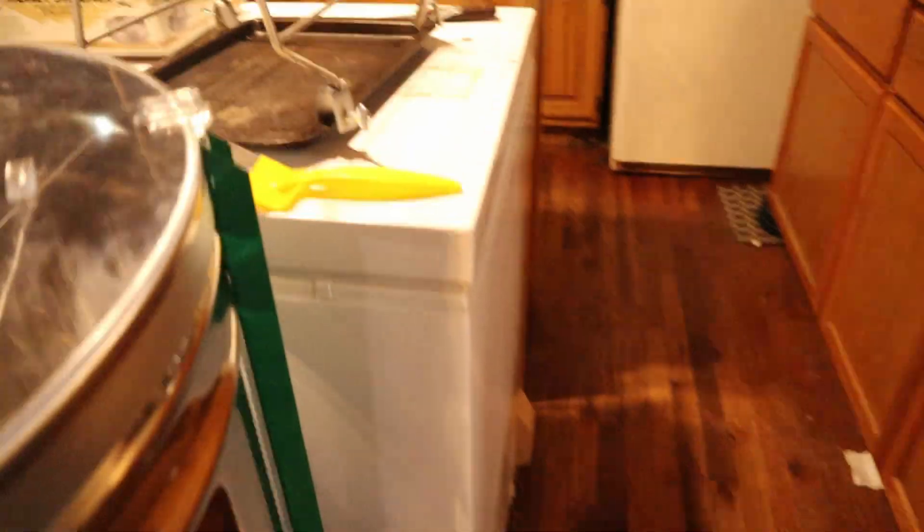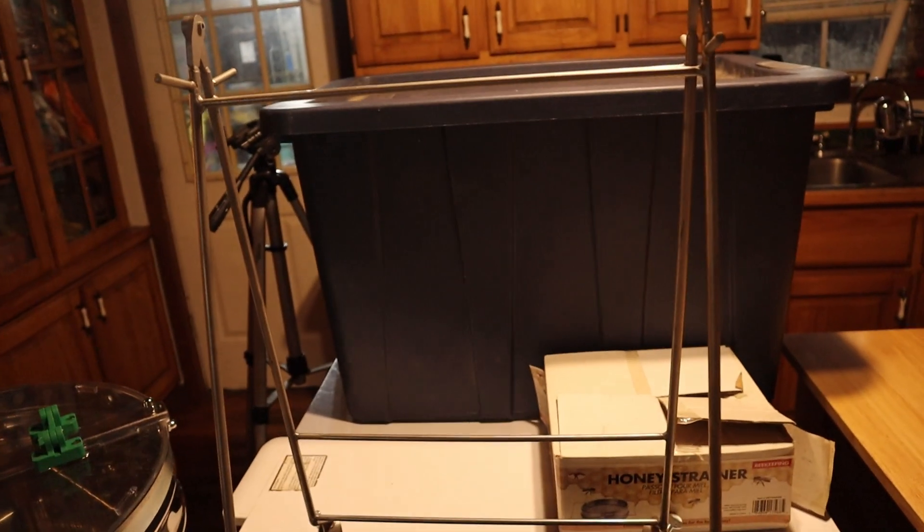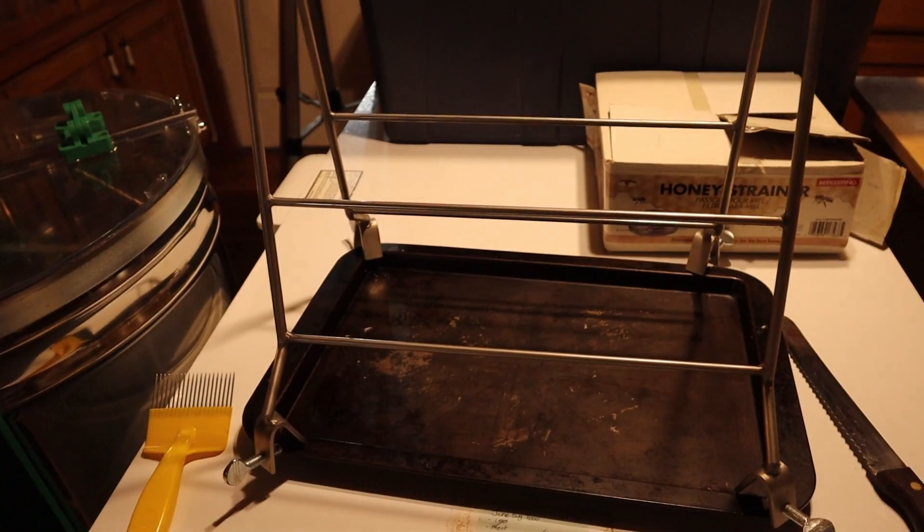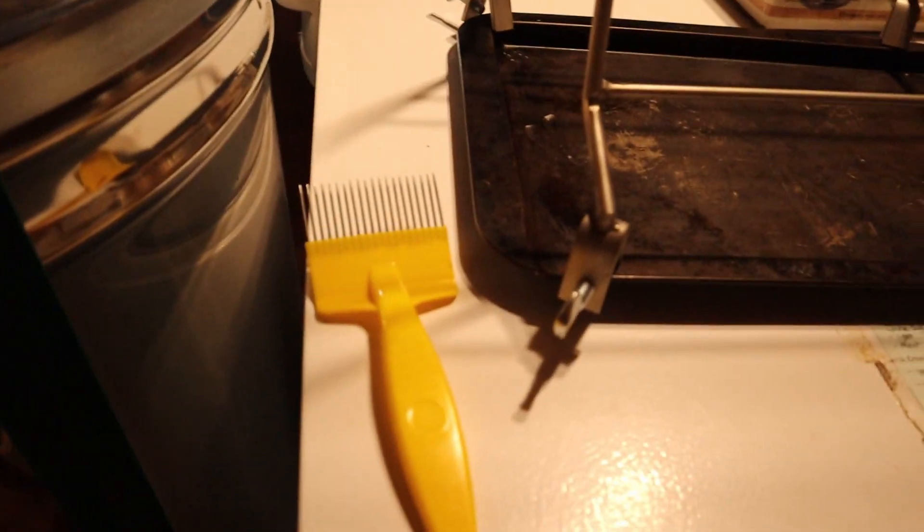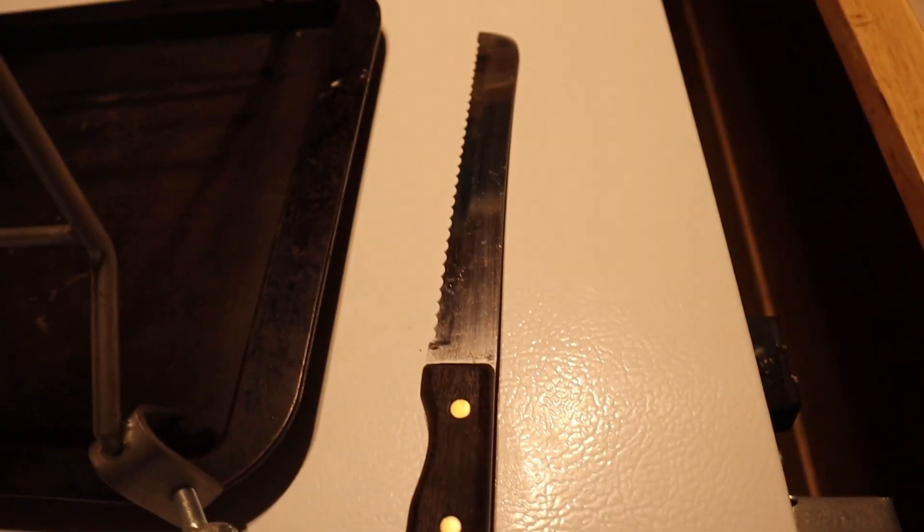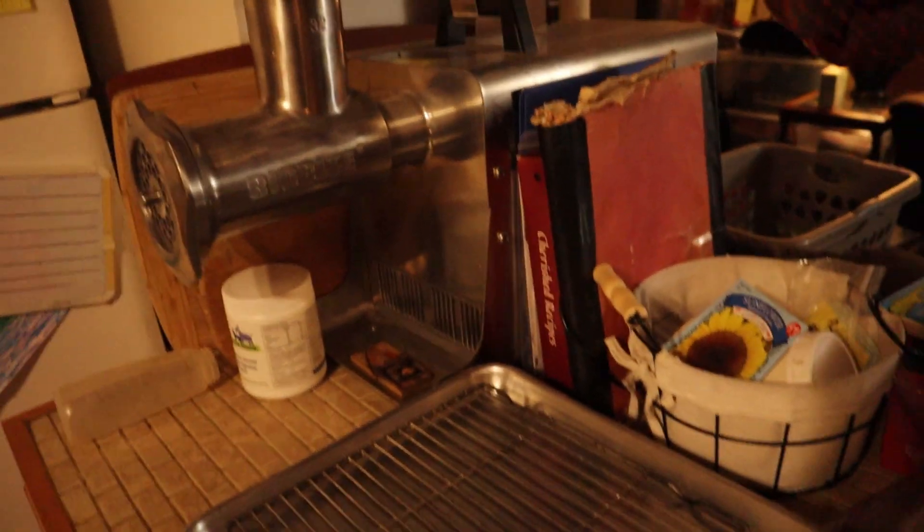Here's my setup. I brought the extractor inside, I've got a strainer and a bucket. My honey gates did not arrive in the mail like I had hoped today, so I think we're just going to strain directly into a five gallon bucket. I've got my stainless steel frame rack here from Dr. Leo to decap the honey on with my decapping tool, and I have a bread knife in case that's easier. In here are the frames I'm going to be working on, and then my plan is to set them up against the grinder after they're done.